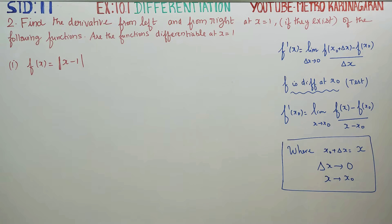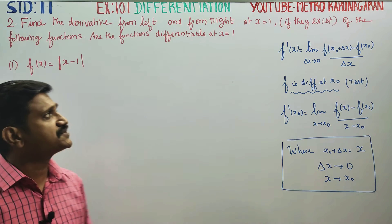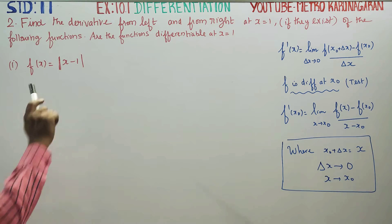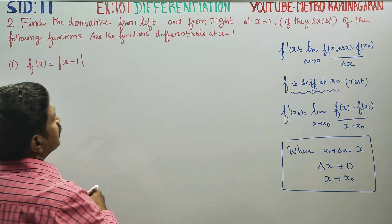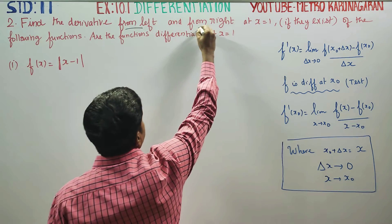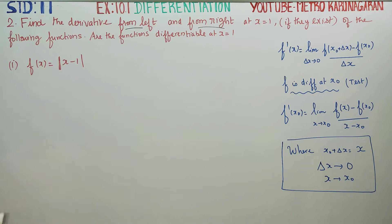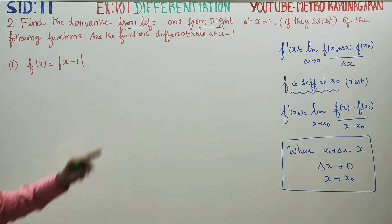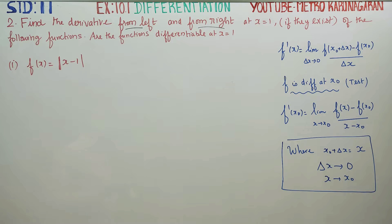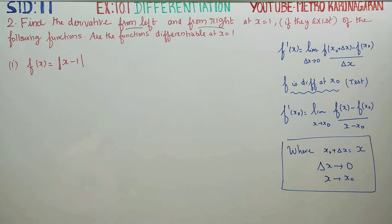Dear 11th standard students, in exercise number 10.1 on differentiation, we need to find the derivative from the left and from the right — that is, one-sided derivatives — at x equal to 1, if they exist, for the following function, and determine whether the function is differentiable at x equal to 1.